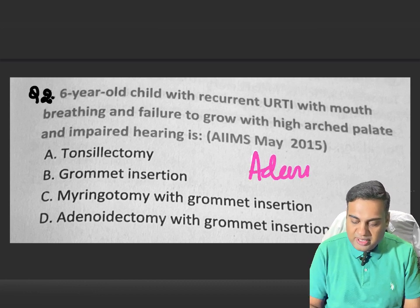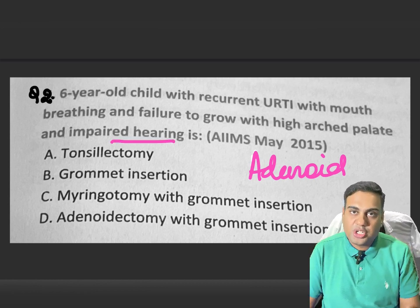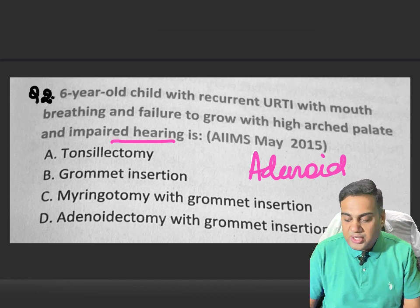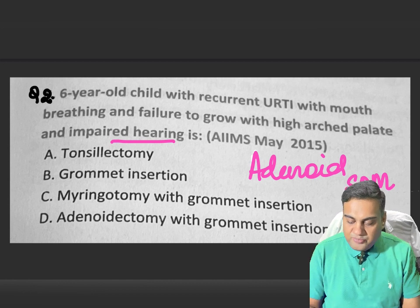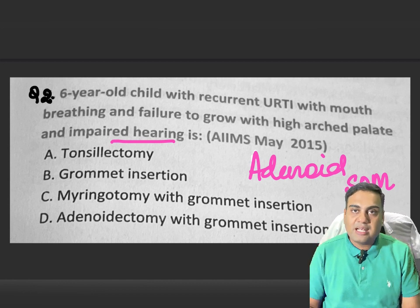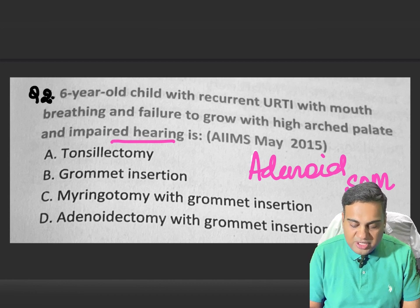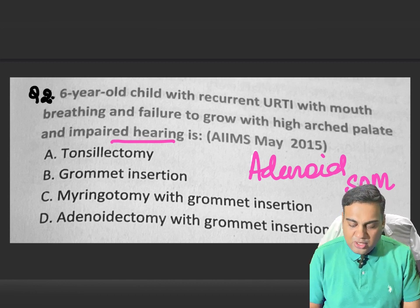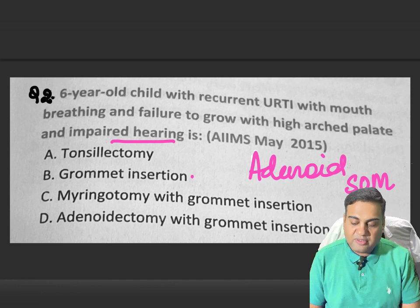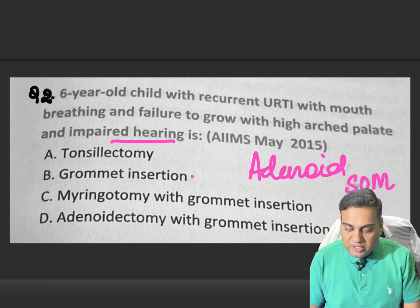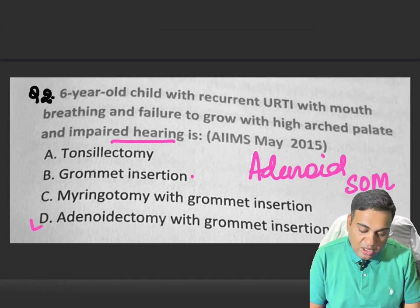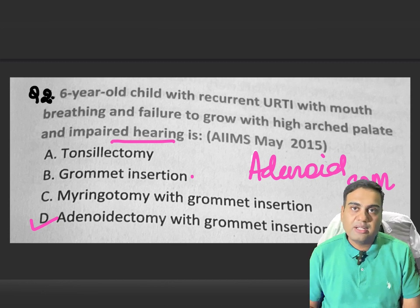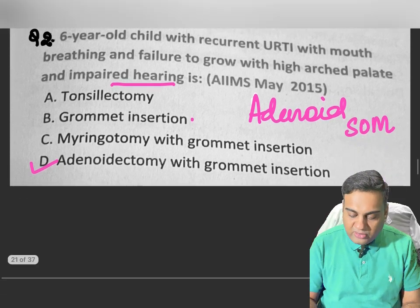With adenoid hypertrophy and impaired hearing, there is Eustachian tube blockage causing conductive hearing loss secondary to secretory otitis media. The next line of treatment is not tonsillectomy — we need to treat the adenoids. The answer is adenoidectomy with grommet insertion: we treat the cause (adenoidectomy) and treat the hearing loss (grommet insertion).